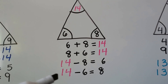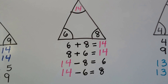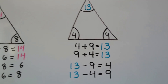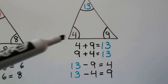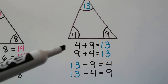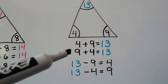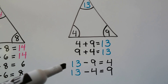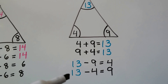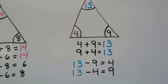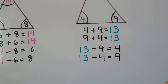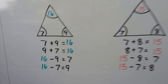Then the sum becomes the minuend for the subtraction sentences: 14 minus 8 equals 6, or 14 minus 6 equals 8. For 13, we have a 13, a 4, and a 9. So 4 plus 9 equals 13, or 9 plus 4 equals 13, and 13 minus 9 equals 4, and 13 minus 4 equals 9. They just traded places, and the sum became the minuend.